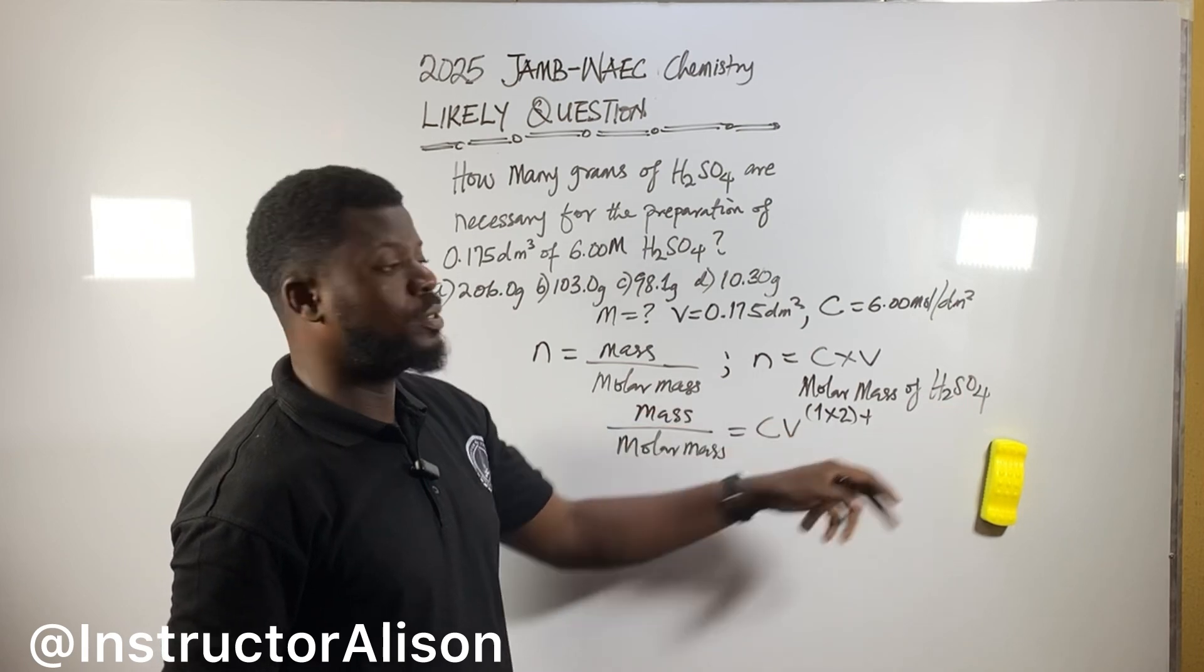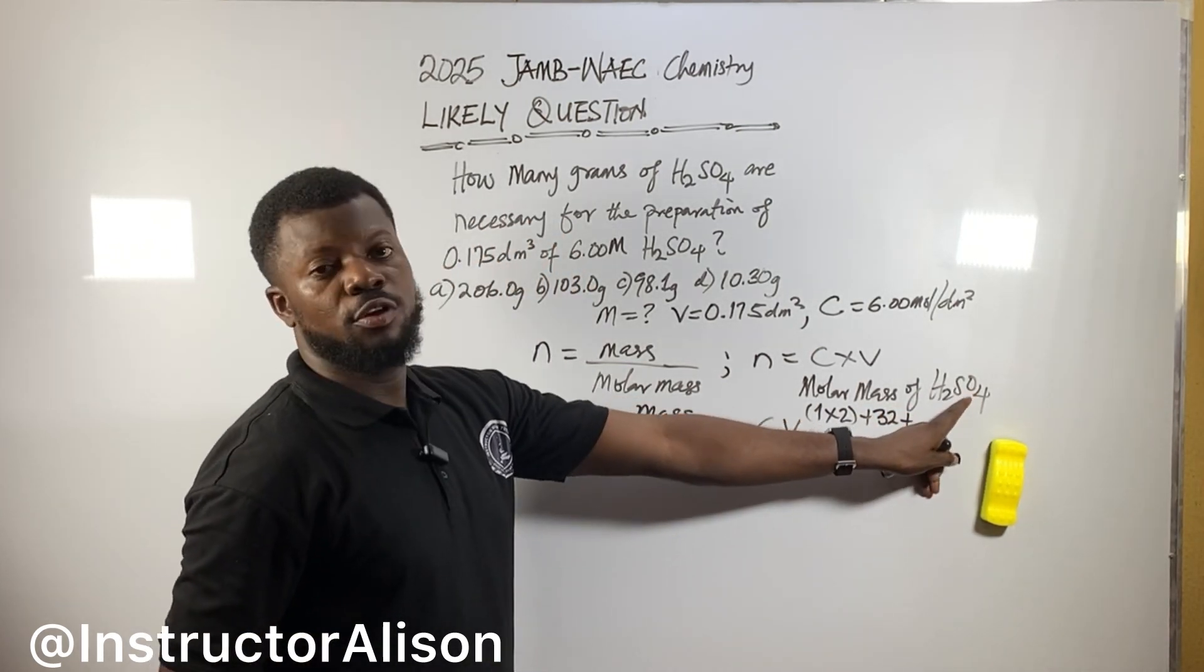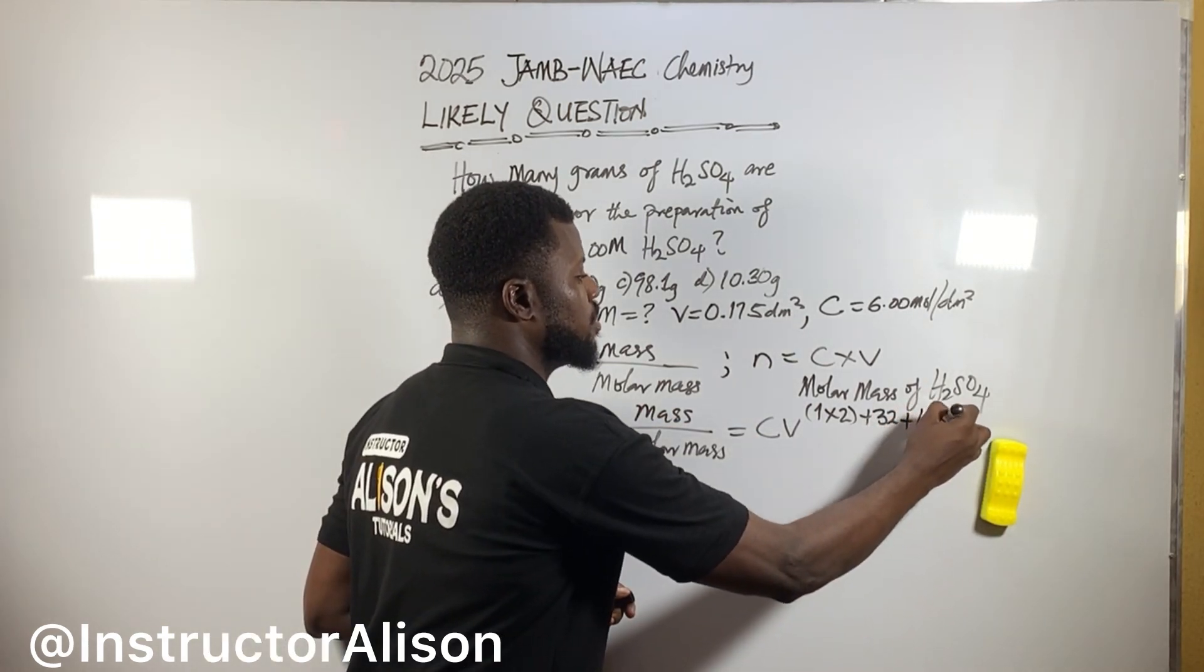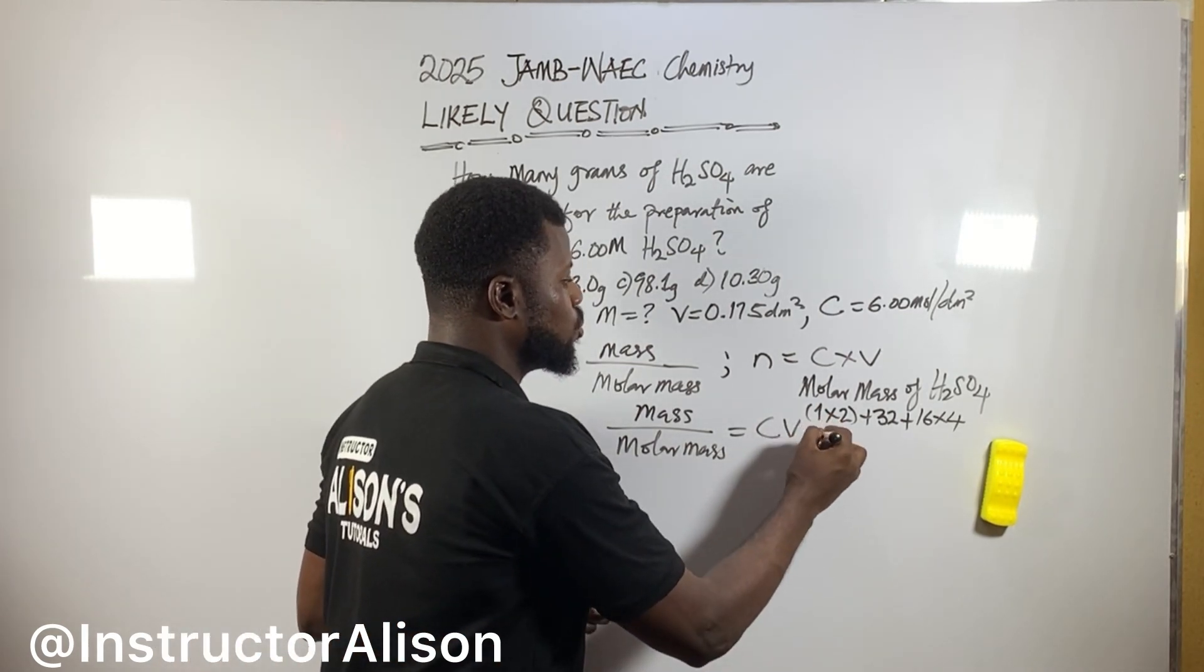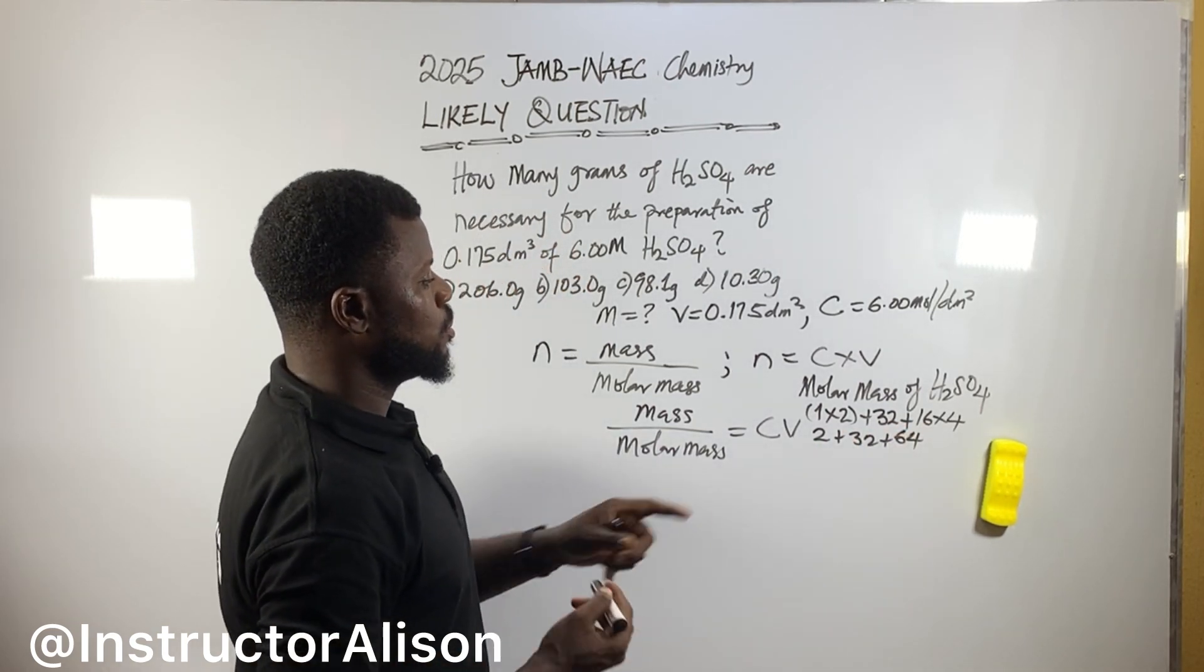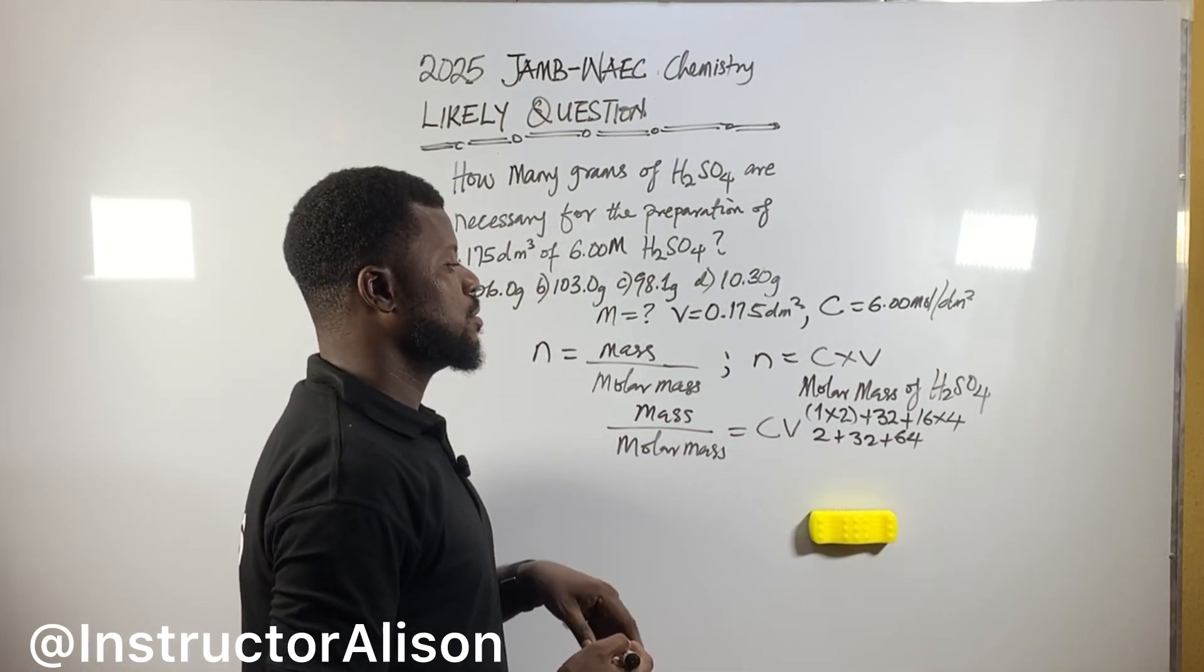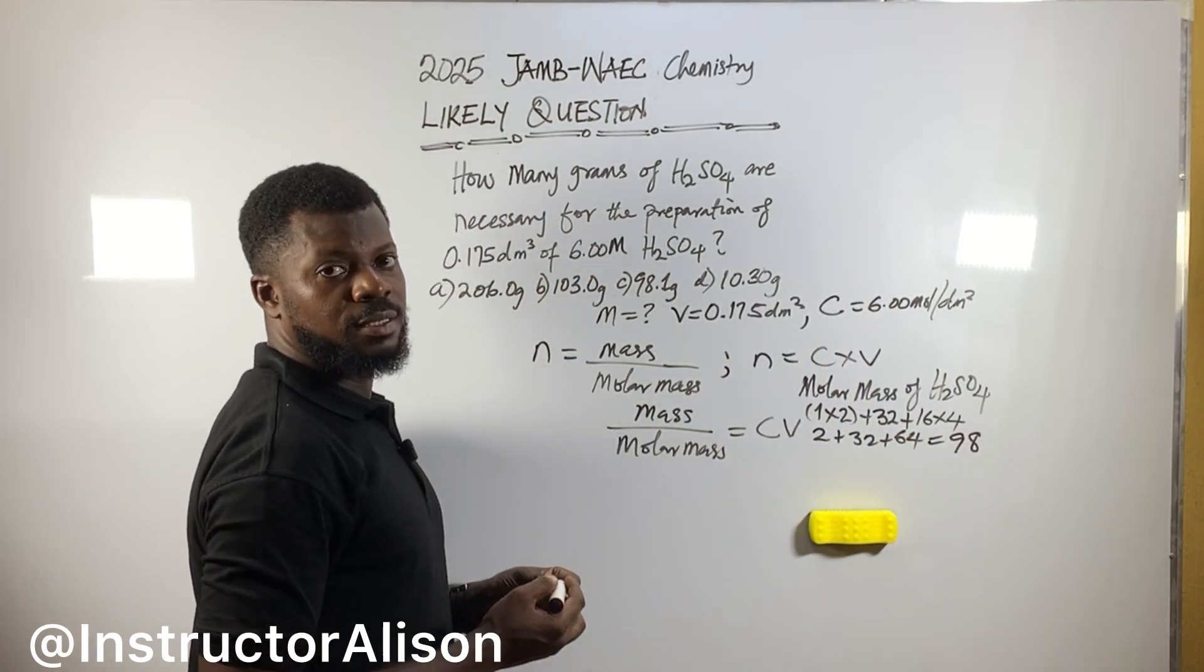Yeah, the mass number will be 32 then. So, plus 32. Plus oxygen. Atomic number of 8, the mass number will be 16. So, 16 times 4. So, 1 times 2 will be 2 plus 32, plus 16 times 4, it will give us about 64. So, 2 plus 32 will be 34. 34 plus 64. It will give us 98. That's for this molar mass.